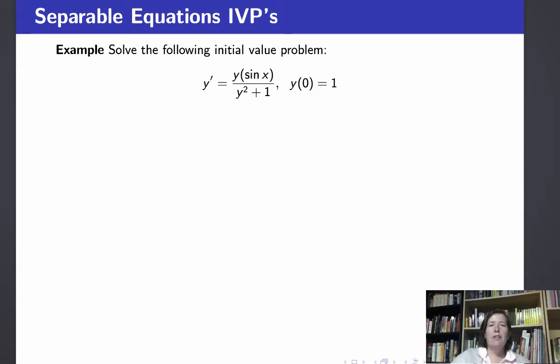Now let's try an initial value problem where there's a unique solution to our equation and we have an initial condition. Let's suppose y prime is y times sine of x over y squared plus 1 and y of 0 is 1.